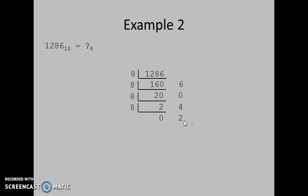We will write down all these values in reverse order. Finally, we get 1286 base 10 equals 2406 base 8. This means 1286 in decimal is equivalent to 2406 in octal.